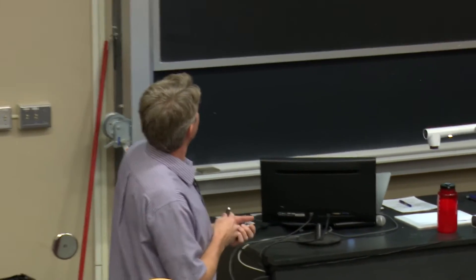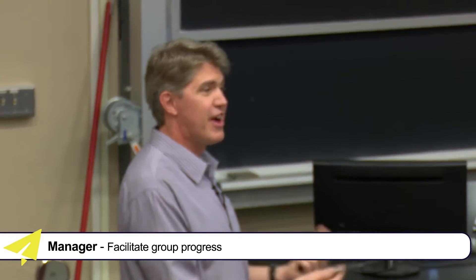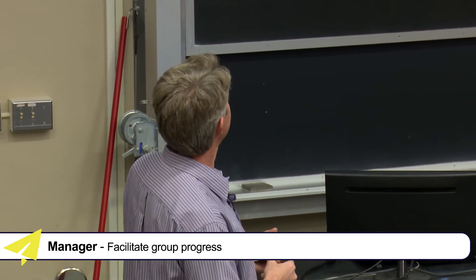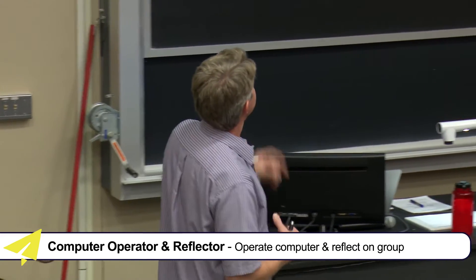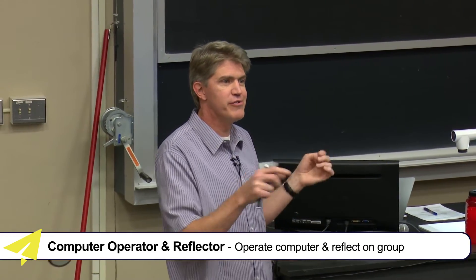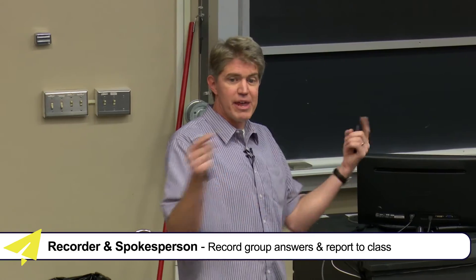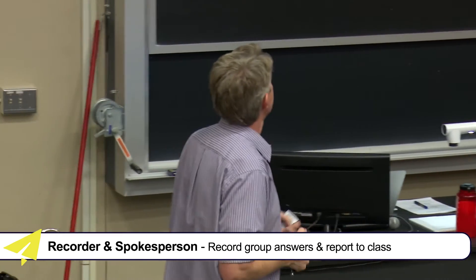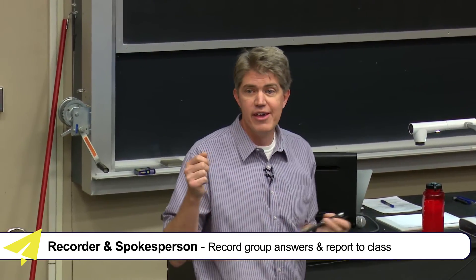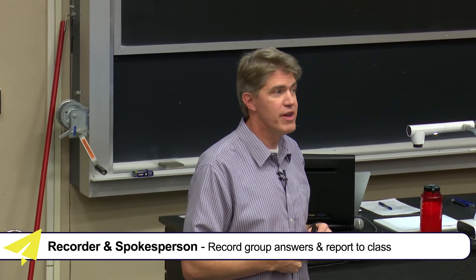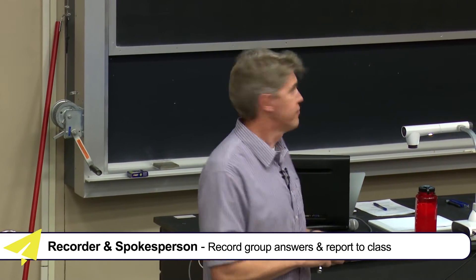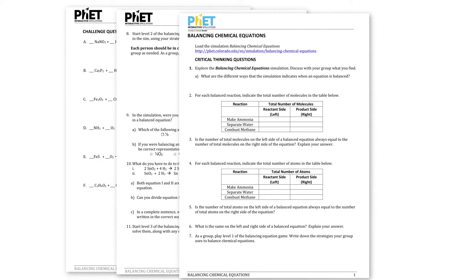In my class, I usually have groups of three students, and each student has a defined role. The manager is the person in the aisle — their job is to control the group and make sure that everybody's moving forward. The person in the middle is the computer operator and reflector, who controls the computer and does the reflector report. The person closest to the middle or outside will be the recorder and spokesperson, whose job is to record the group consensus answers and report back to the class.